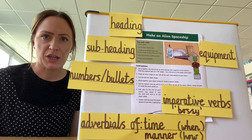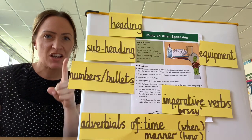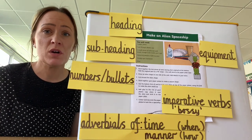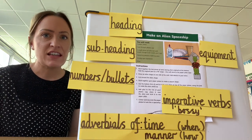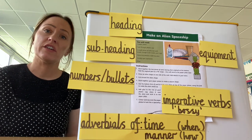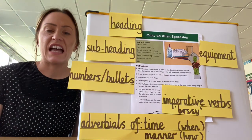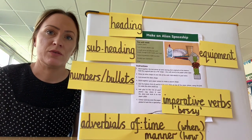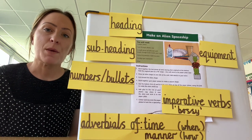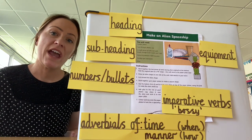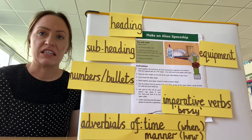Well done, Year 2. Our sixth and final feature is a bit of a sneaky one because there aren't any of these types of words in this set of instructions. However, this is a type of word that we use lots and lots in our writing. Let's think about adverbials — adverbials of time and adverbials of manner. Adverbials of time tell us when something is going to happen. Adverbials of manner tell us how something is going to happen.